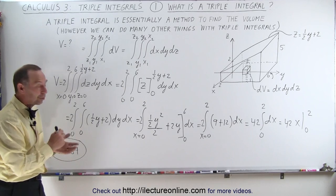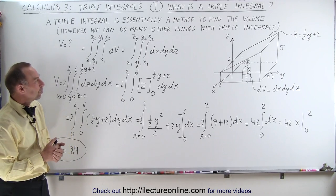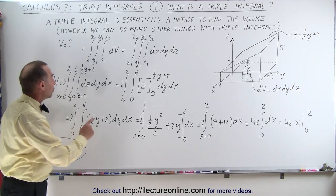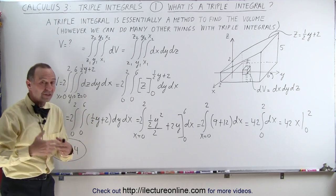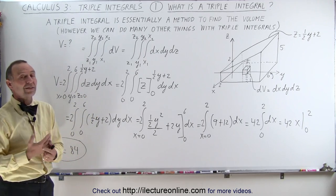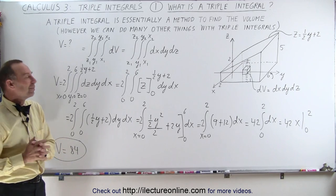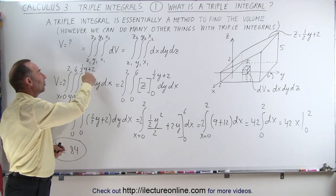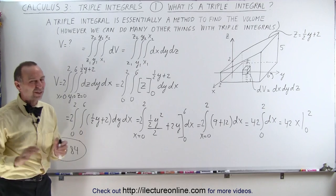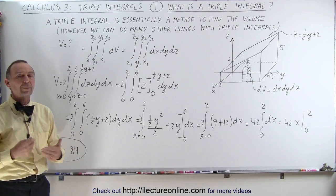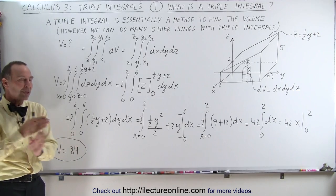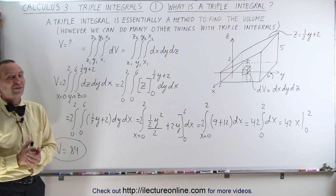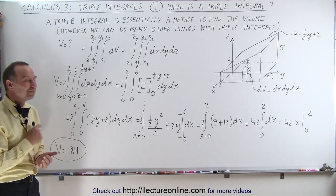This is a very simple triple integral — they can get quite a bit more complicated, but at least you can see the methodology. If you're wondering whether you can integrate another dimension first, the answer is yes. You'll most likely get the exact same answer, provided you didn't make any mistakes. However, sometimes it makes more sense to start with a particular dimension, especially when one of the limits is a function of another variable. With practice, we'll show that you can interchange the order of integration and typically get the same result.